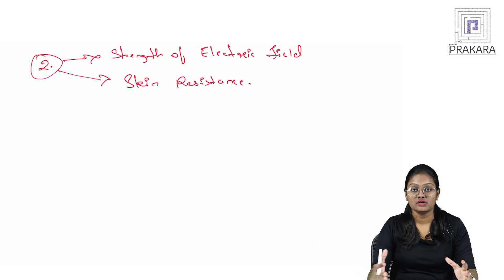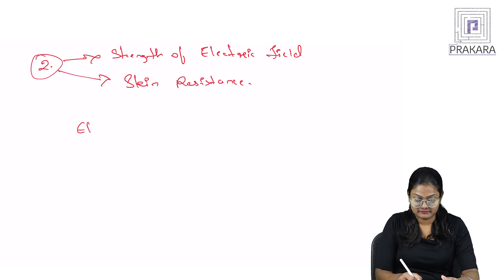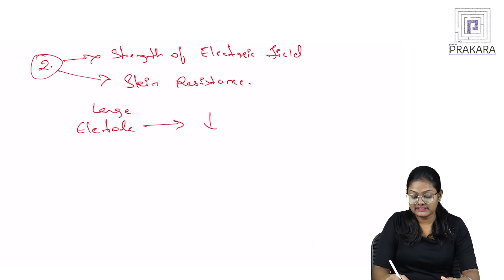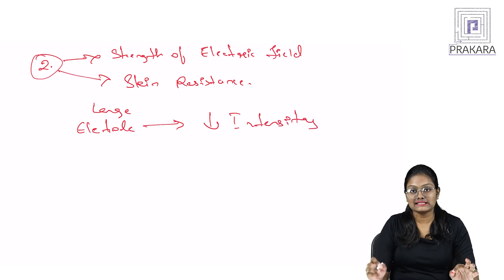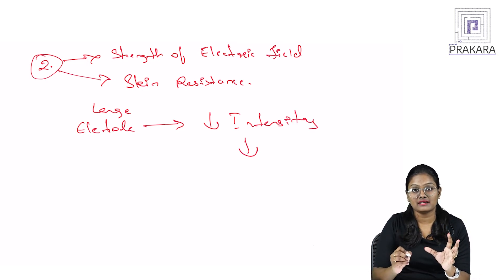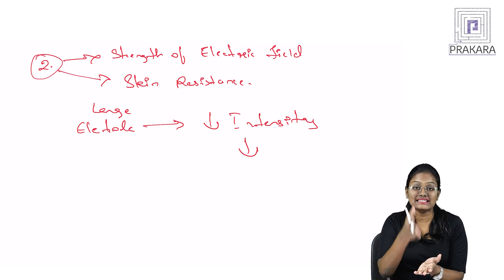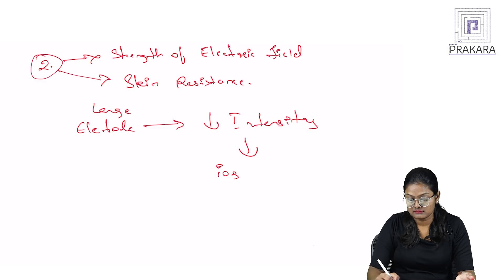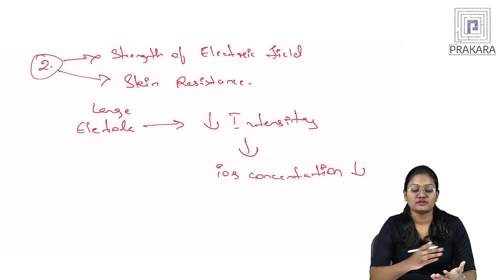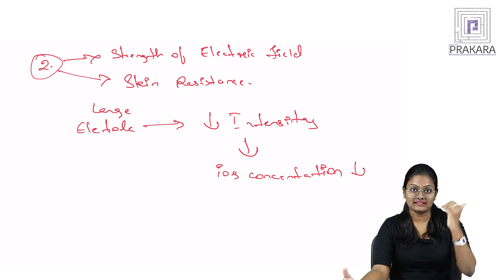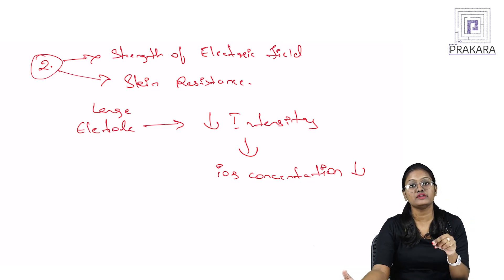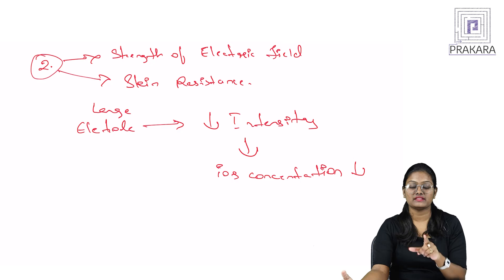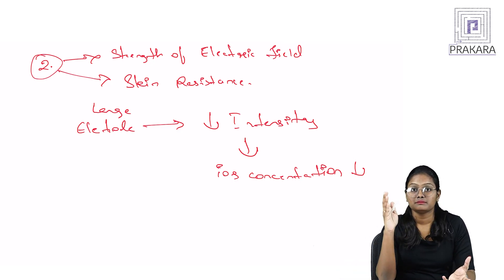How do we control the strength of the electric field? If you use a larger electrode, the intensity will decrease. Once the intensity decreases, the concentration of ions being sent into the body also decreases. So always properly choose the electrode size, as it directly affects the strength of the electric field and therefore the concentration of ions transferred into the body.